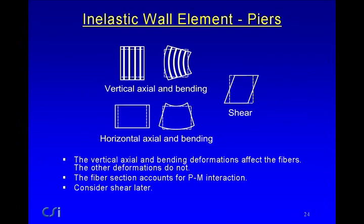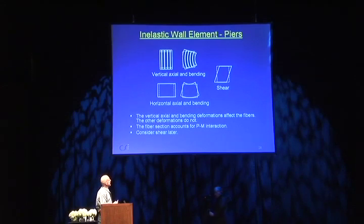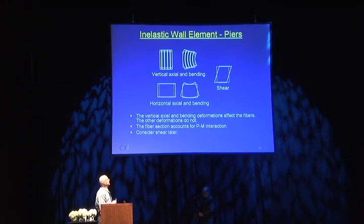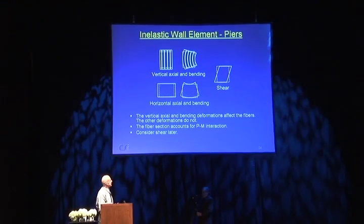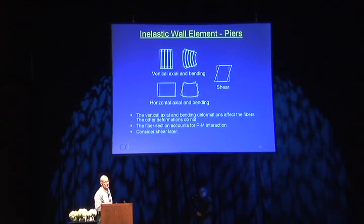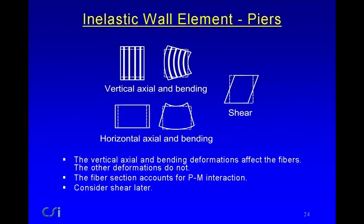For an inelastic wall element used as a pier: for vertical axial and bending, you use a fiber section — the horizontal cross-section is a fiber cross-section with fibers running vertically. When you have axial extension and bending, this deforms the fibers. Horizontally, it's assumed to be elastic. Shear can be elastic or inelastic depending on the situation. The vertical axial and bending deformation affect the fibers; the fiber section accounts for PM interaction. For modeling beams with inelastic wall elements, you can rotate it so it's horizontal, or use a different element in PERFORM that has fibers in both directions — called a shear wall element versus a general wall element.